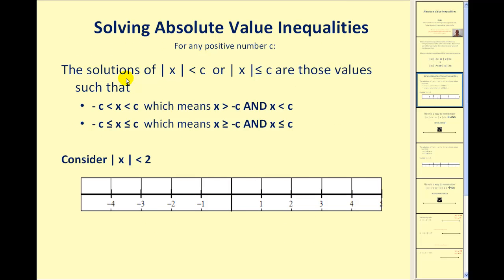Let's consider the first case. The solutions of the absolute value of X less than C, or less than or equal to C, are those values such that X is between negative C and positive C, and it may or may not include C based upon the original inequality symbol. This compound inequality can be written as X is greater than negative C and X is less than or equal to C. Notice the inequality involving positive C is essentially the same except we drop the absolute value, and for the second inequality we change the sign of C and also reverse the inequality symbol.